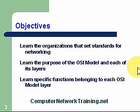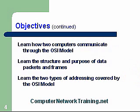Learn specific functions belonging to each OSI model layer — it's going to be important to get really intimate with the OSI. Learn how two computers communicate through the OSI model, and how that relates to communication over the network and the Internet. Learn the structure and purpose of data packets and frames, including the difference between a data packet and a frame. Learn the two types of addressing covered by the OSI model: IP addressing and MAC addressing, or logical and physical.